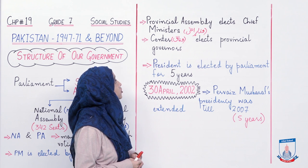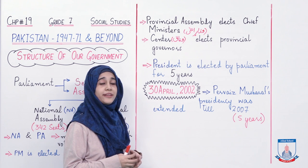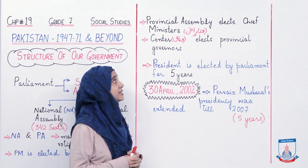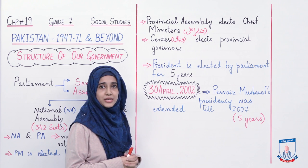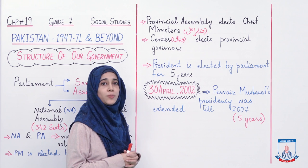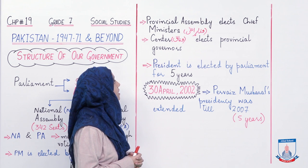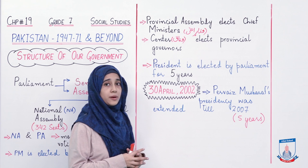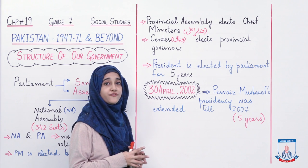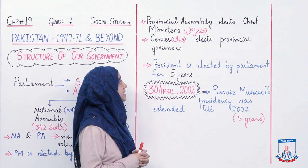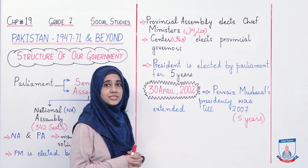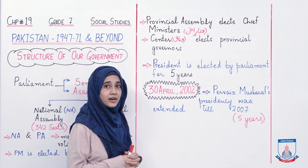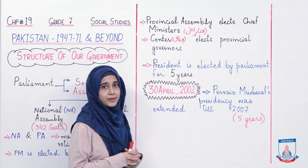Provincial assembly elects chief ministers. Hamare wazir-e-aala kaun banta hai? Hamare wazir-e-aala banati hai hamari provincial assembly, yaani ke hamari subhai assembly. Center elects provincial governors. Hamara jo wifaq hai, hamari jo federal government hai, woh banati hai hamare provincial governors, yaani ke hamare subhai governor banta hai hamara wifaq, hamari federal government.